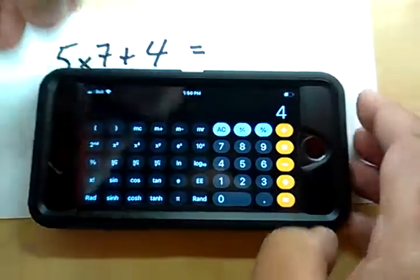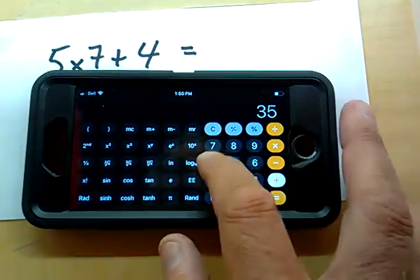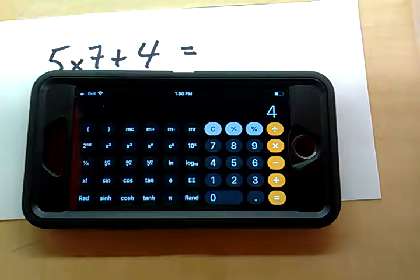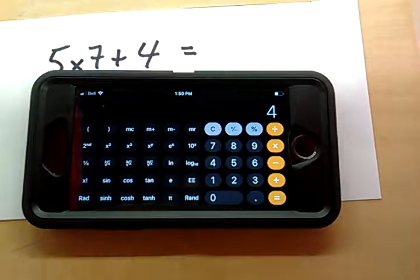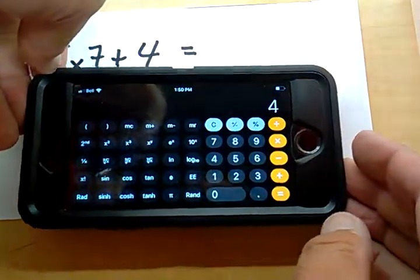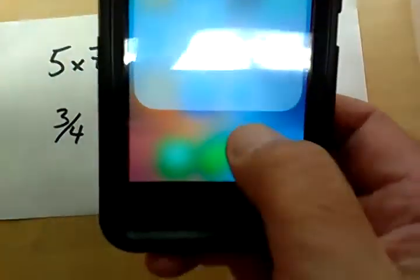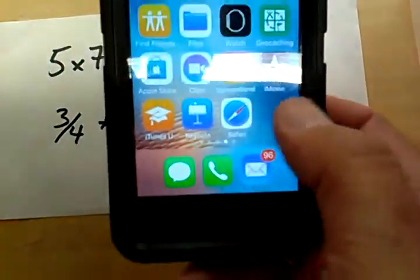But notice it's no better. 5 times 7 plus 4. Notice it didn't show you what you typed in. So even your calculator phone probably is no better than a Dollarama one. So you know what? You can always download an app on Play Store or Google Play, whichever app you use.